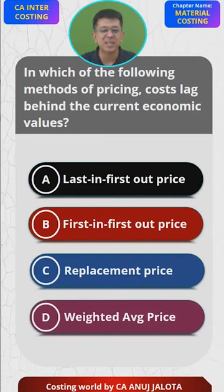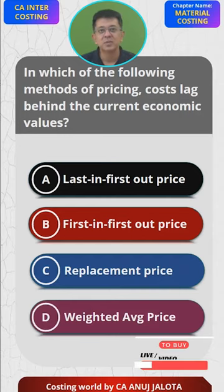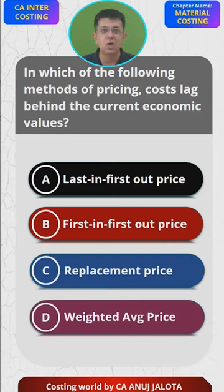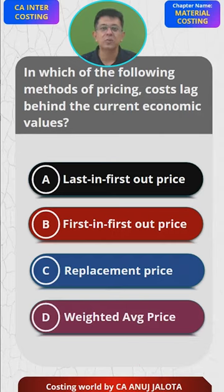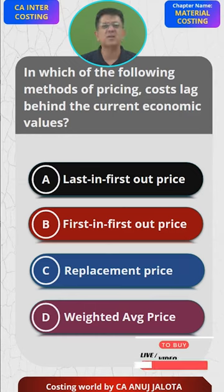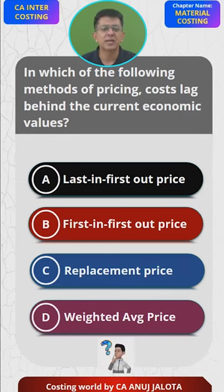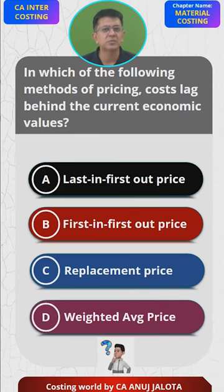I think it's an easy answer. I'll explain the meaning of the question: under which of the methods do costs lag behind current economic value? Current economic value means the current worth of those goods. Think of the correct answer and comment in the section below.